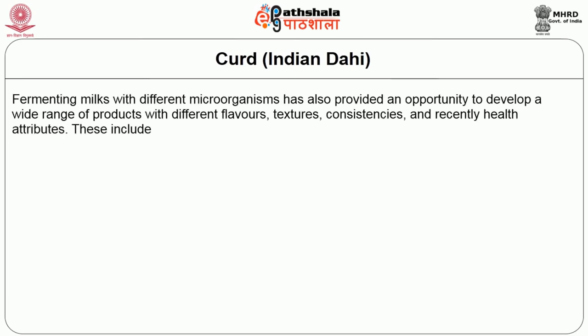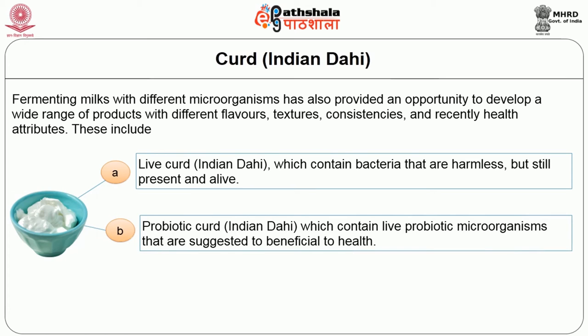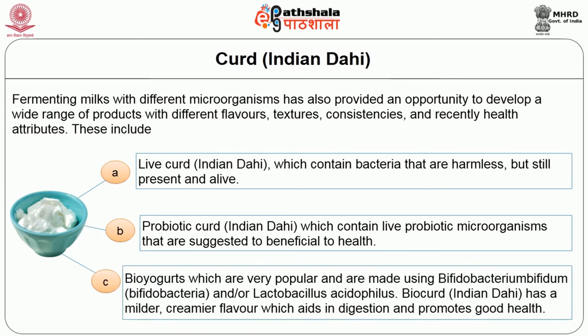Fermenting milk with different microorganisms has provided an opportunity to develop a wide range of products with different flavors, textures, consistencies and health attributes. These include: live curd, which contains bacteria that are still present and alive, more like probiotics and prebiotics; probiotic curd, which contains live probiotic microorganisms suggested to be beneficial to health; and bio yogurts, which are made using Bifidobacterium bifidum and/or Lactobacillus acidophilus. Bio curd has a milder, creamier flavor which aids in digestion and promotes good health.